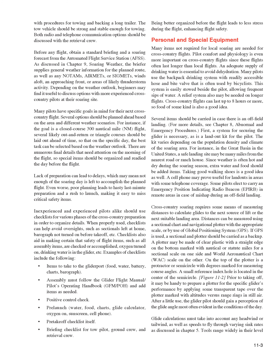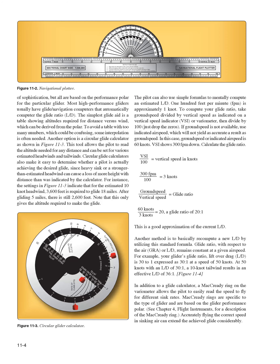On top of the plotter is a protractor or semicircle with degrees marked for measuring course angles, with a small reference index hole in the center. Prior to takeoff, it may be handy to prepare a plotter for the specific glider's performance by applying transparent tape marked with altitudes versus range rings in still air. Glide calculations must take into account any headwind or tailwind, as well as speeds to fly through varying sink rates. The simplest glide aid is a table showing altitudes required for distance versus wind, derived from the polar.